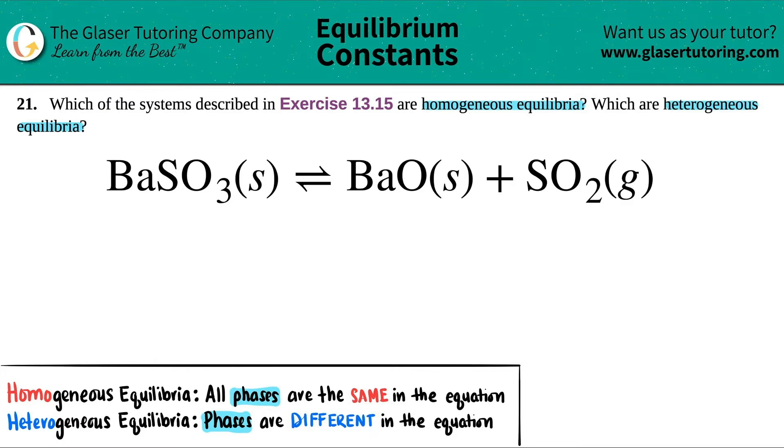Now let's look over here. I have a solid. BaSO3 was a solid. I have BaO, which was a solid. And then I have SO2 as a gas.